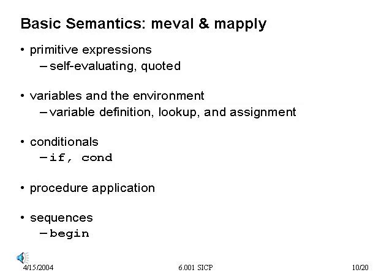Here's a quick synopsis of the evaluator. It dispatches on type. The first things it checks are the primitives — things that are self-evaluating or merely quoted. Second, it deals with variables and how they're manipulated within the environment: defining, looking up, and changing values. The third set are conditionals, ways of branching depending on what the value of an expression is. We've added cond here as well. Then ultimately we get to procedure application. We've also added a new feature: dealing with sequences of expressions — begins. Let's look at that before coming back to procedure application.